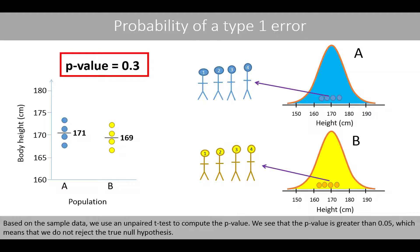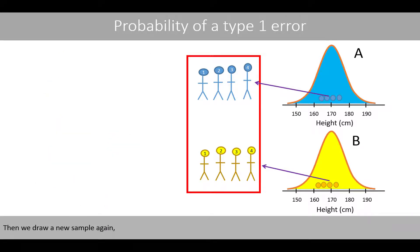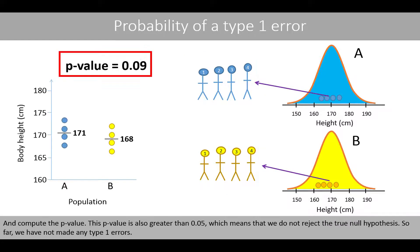We see that the p-value is greater than 0.05, which means that we do not reject the true null hypothesis. We then draw a new sample again and compute the p-value. This p-value is also greater than 0.05, which means that we do not reject the true null hypothesis. So far, we have not made any type 1 errors.